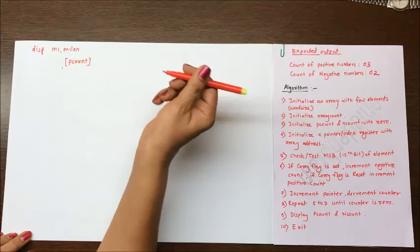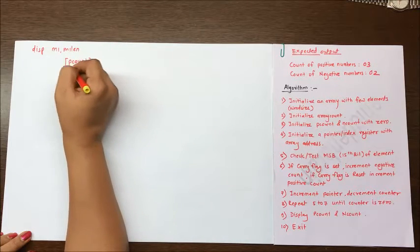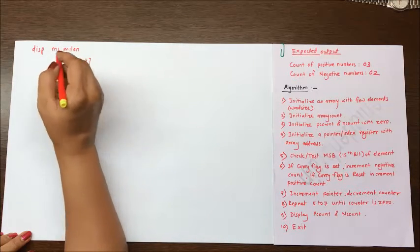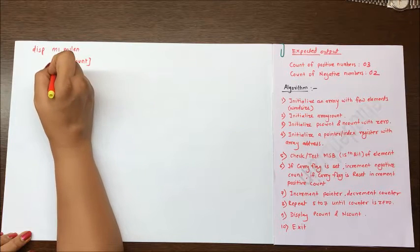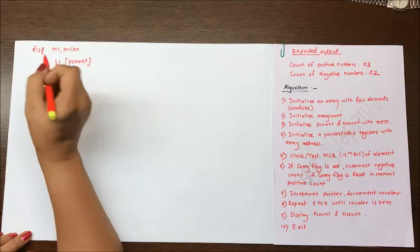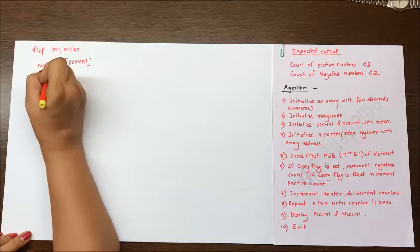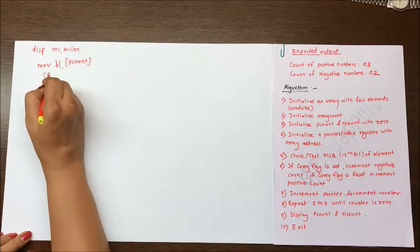So you know that if you want to display two digits which is the size of your p count that is byte size, you have to move this result to bl register which is an 8 bit register. So move bl, p count and call display.